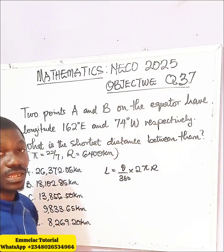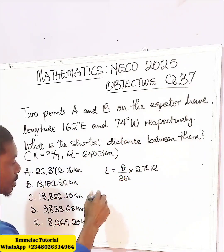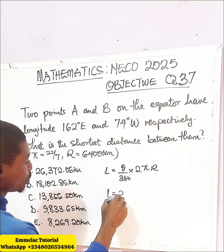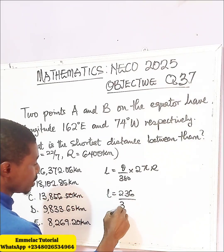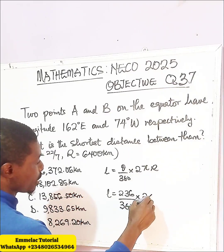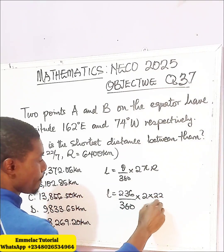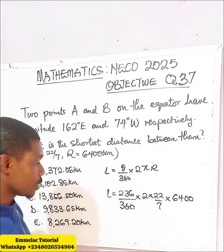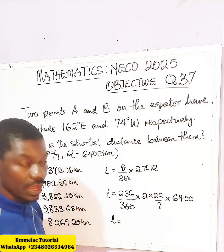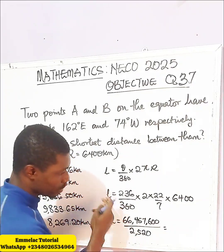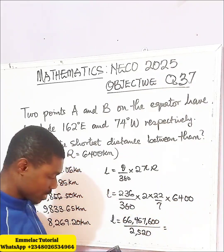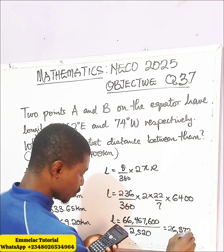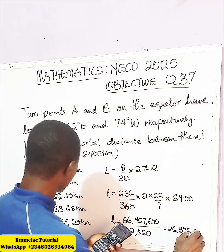So theta is 162 plus 74, which gives us 236 degrees. Therefore L equals 236 over 360, times 2 times 22 over 7, times 6,400. Computing both numerator and denominator using a calculator, we get 26,372.06 km.